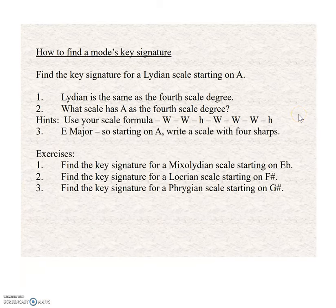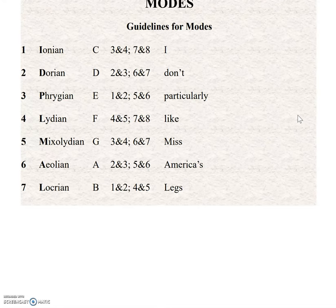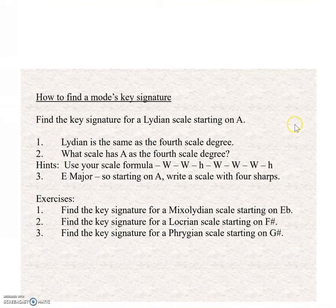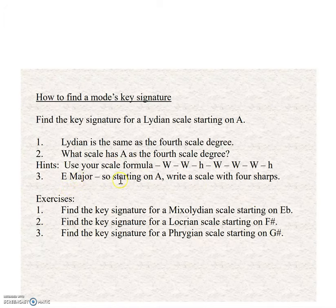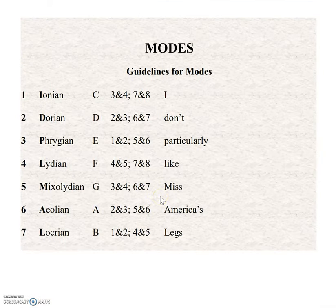You can say Lydian is the same as the fourth scale degree. Because remember — 'I don't particularly like' — the first L is Lydian. So a Lydian scale starting on A: A is the same as the fourth scale degree. What scale has A as the fourth scale degree? The answer is E major. So you start on A and write a scale with four sharps. Personally, I think it's easier to do it my way.